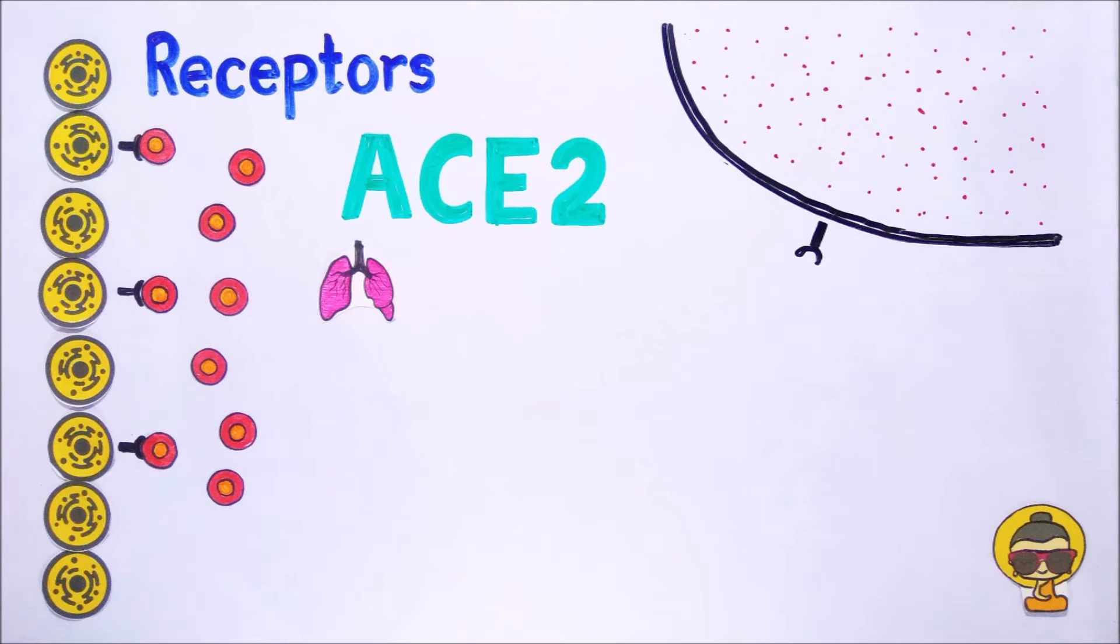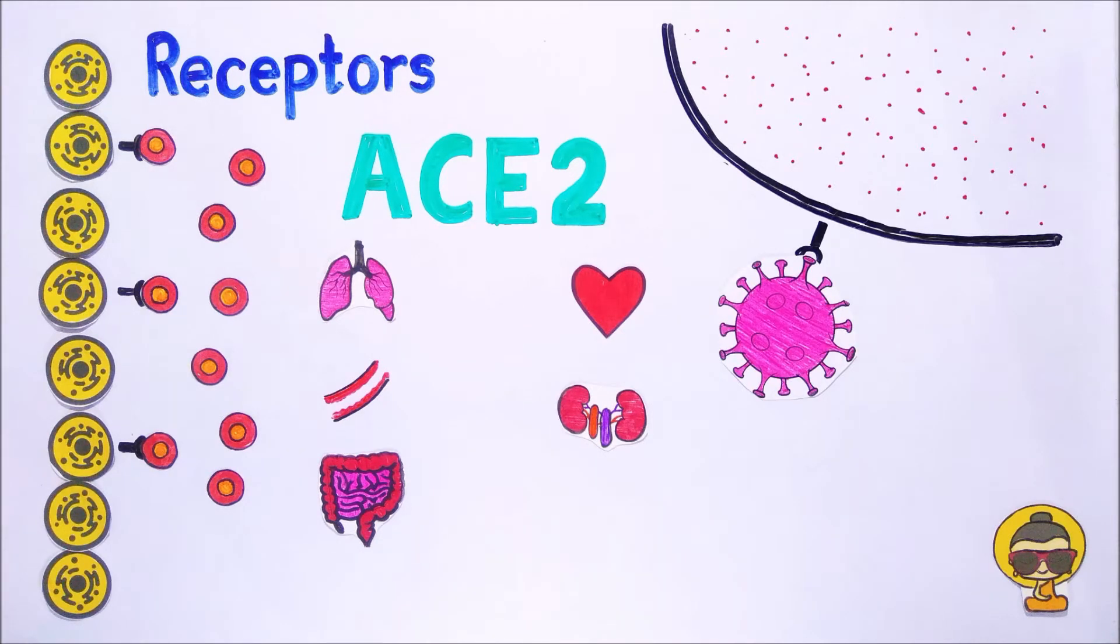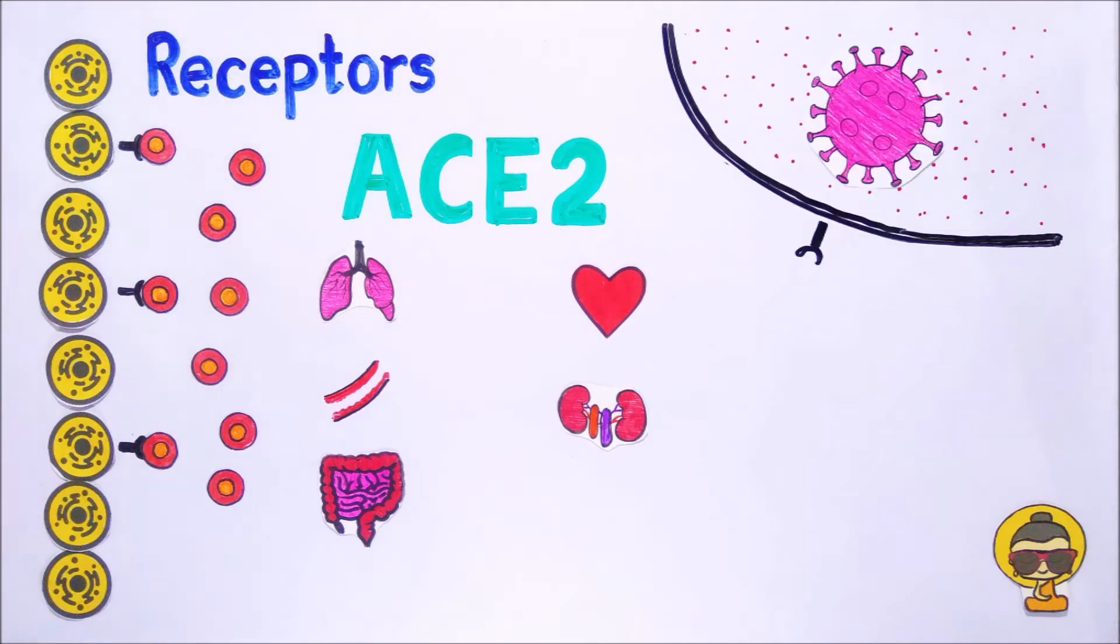ACE2 is found in the cells of lungs, arteries, heart, kidney and intestine. The spikes on the surface of coronavirus are made up of specific protein. The structure of some spikes is such that it perfectly fits the ACE2 receptor. When these spikes get attached to ACE2 receptors, the door opens and virus enters into the cell. In this way, these spikes play the role of duplicate keys.